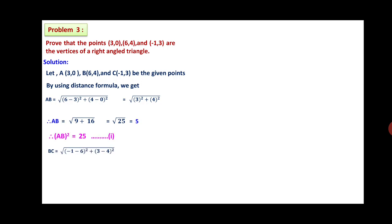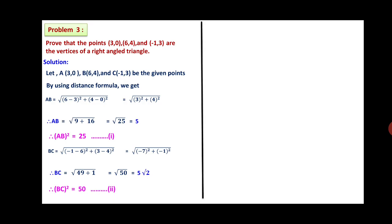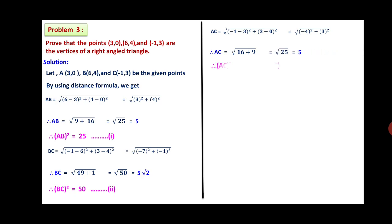BC = √[(-1-6)² + (3-4)²] = √[(-7)² + (-1)²] = √[49 + 1] = √50 = 5√2. Therefore BC² = 50, statement 2. Also, AC = √[(-1-3)² + (3-0)²] = √[(-4)² + 3²] = √[16 + 9] = √25 = 5. Squaring: AC² = 25, statement 3. Since the sum of any two sides is greater than the third side, the points A, B, C form a triangle.